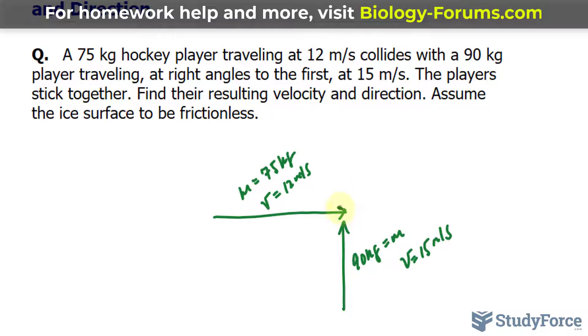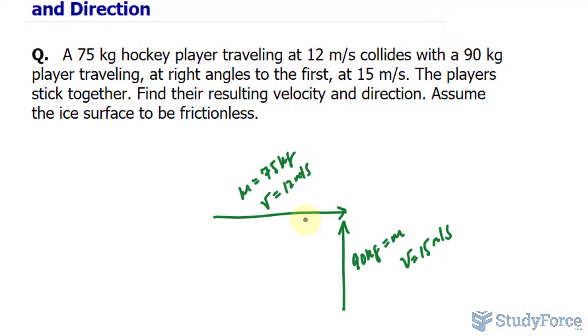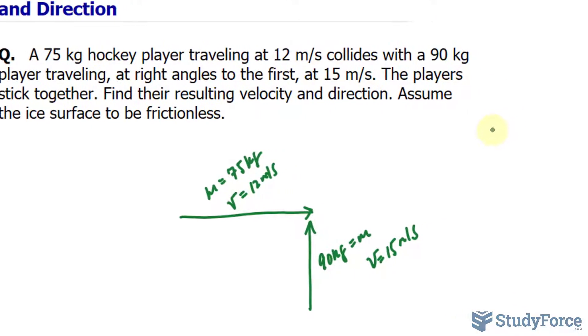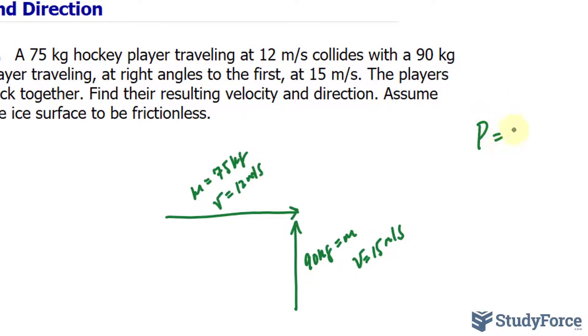Once they hit, they stick together and we want to know where they are heading, their velocity and direction. To tackle this problem, I'll be using the formula for momentum being p equals mass times velocity, and I'll use this value to represent the magnitude of each of these vectors.